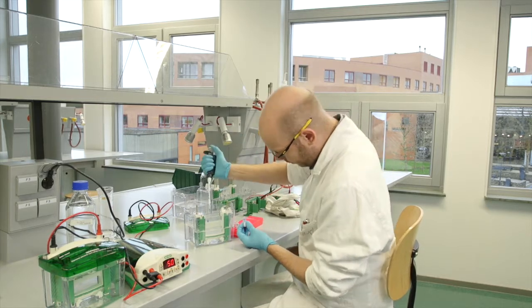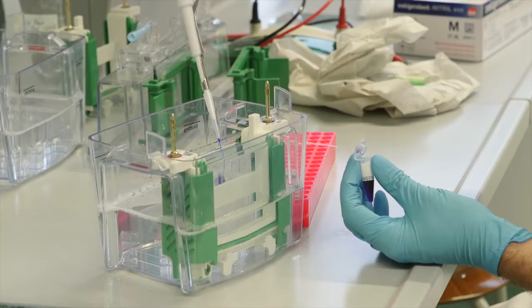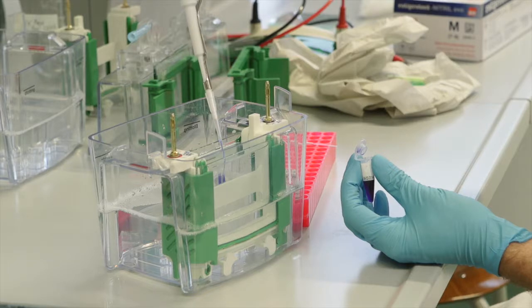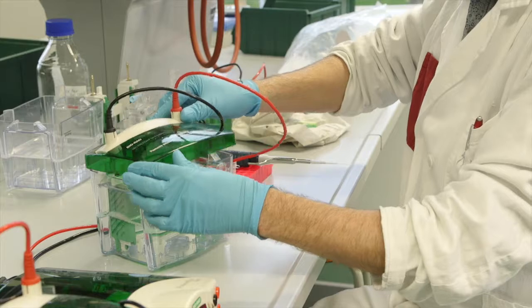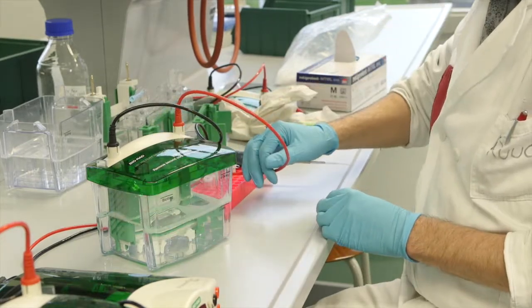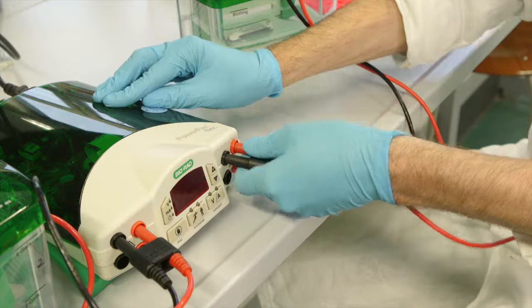In addition to the samples, load a protein ladder on the gel. This is 5 microliters in a well. When everything has been loaded onto the gel, the lid is put on the chamber. Make sure that the poles are lined up correctly, red to red and black to black.